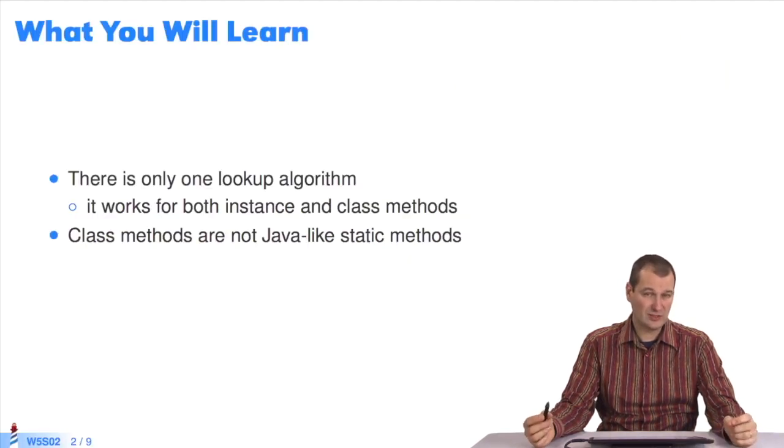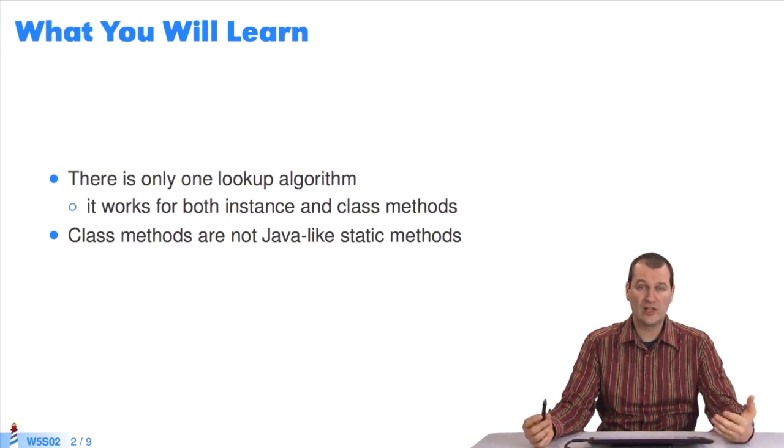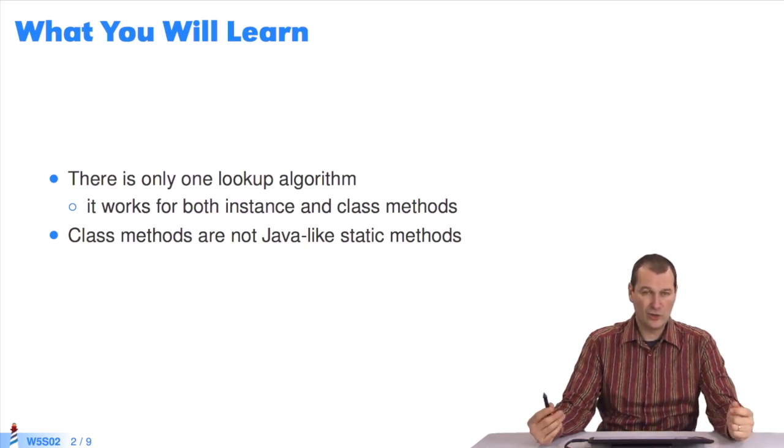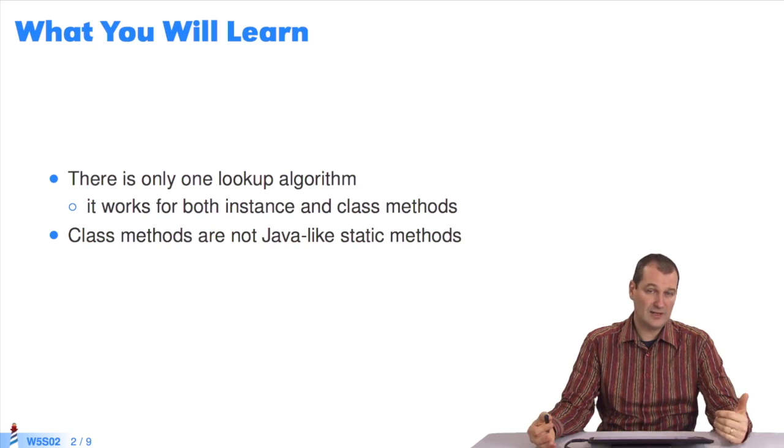You'll learn in this course that there's no difference in Pharo between class and instance methods on a search algorithm level. There's only one search algorithm alluded to and used. That's defined in the virtual machine. And you'll see that while we could have said that the class methods at first glance are like static Java methods, they're not. In fact, they are dynamically linked. There's a search and execution.